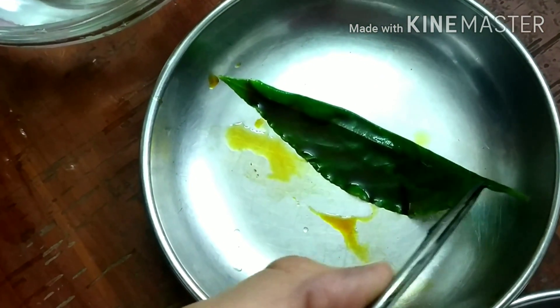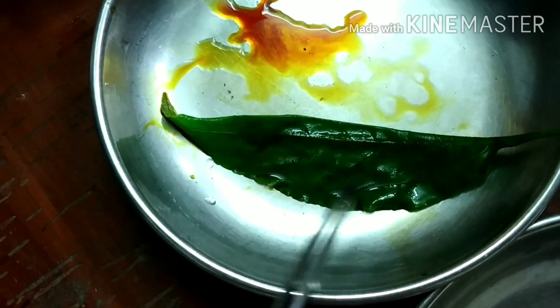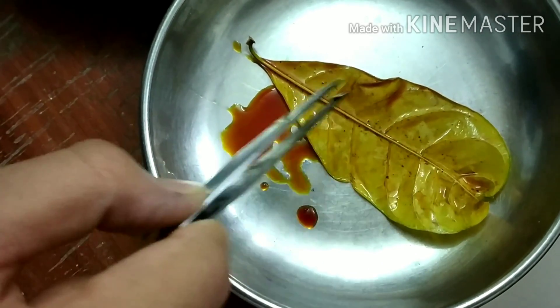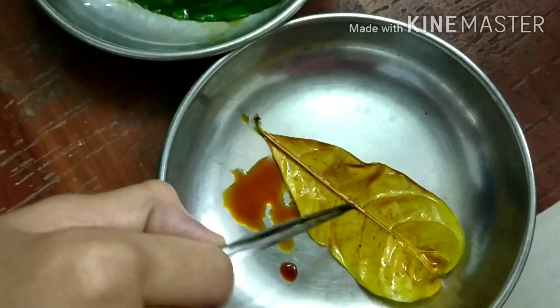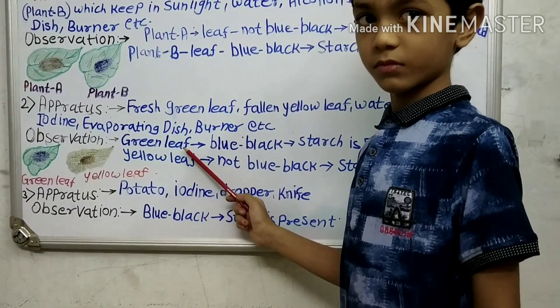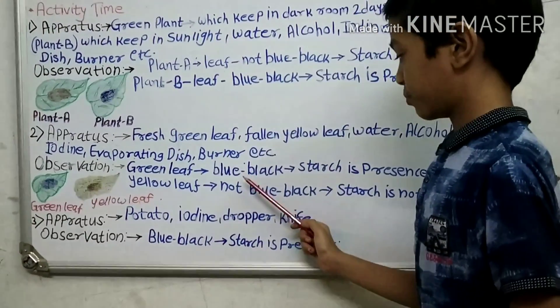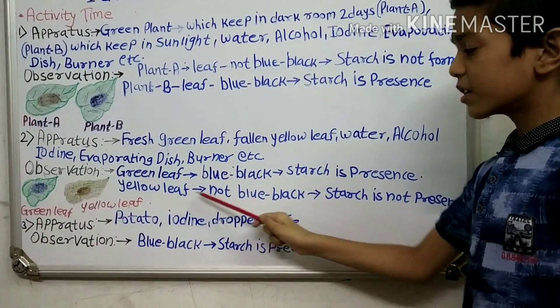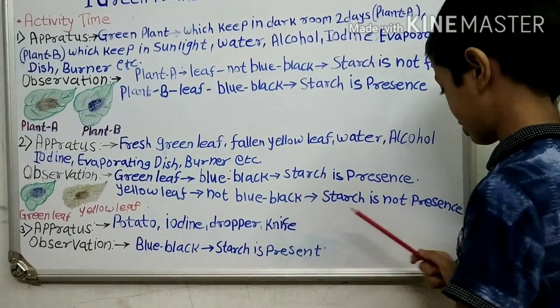Now let's see. The green leaf has turned blue-black in color on its surface, while the yellow leaf has a brownish color. The green leaf turned blue-black because starch is present. The yellow leaf did not turn blue-black because starch is not present.